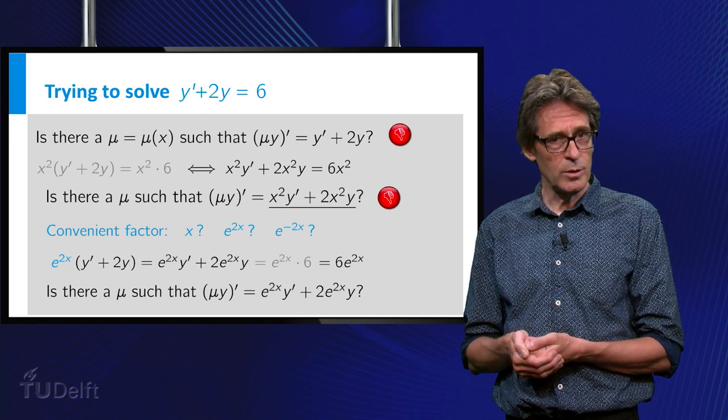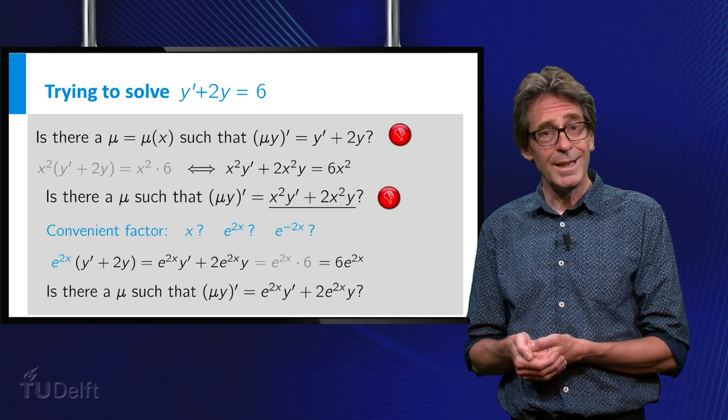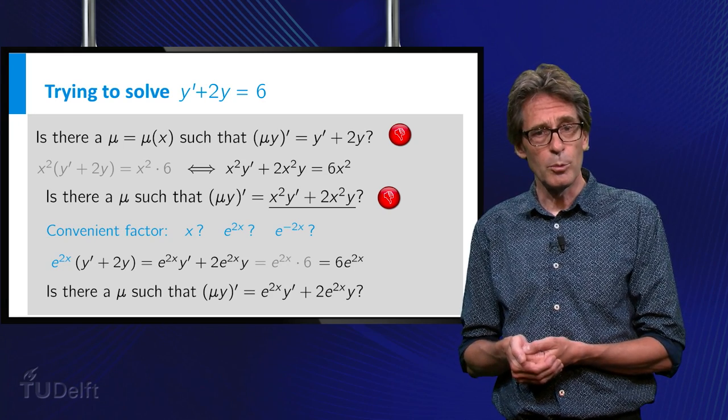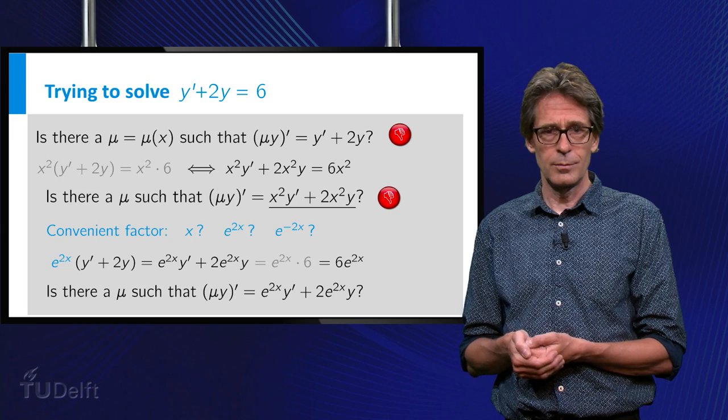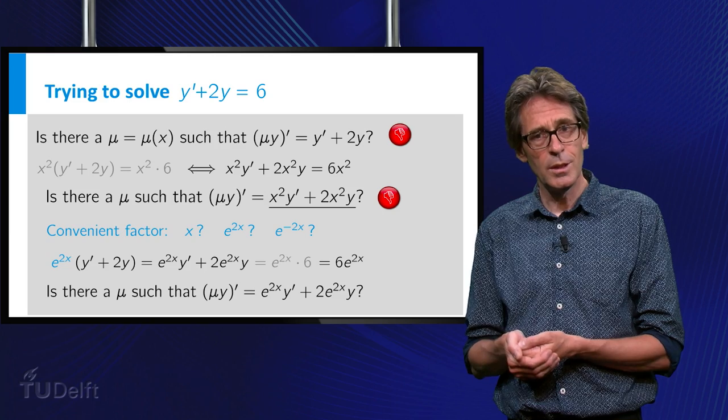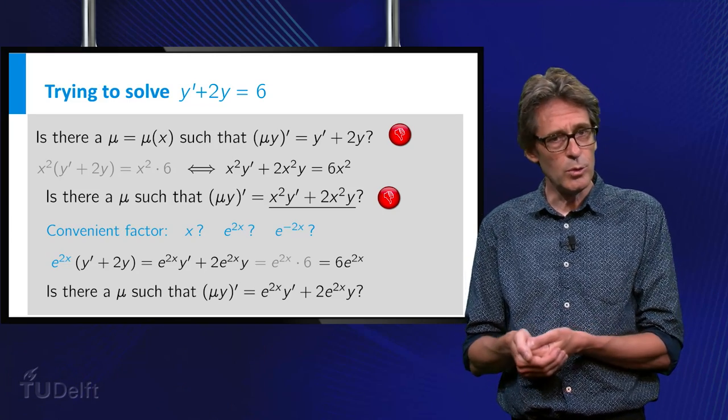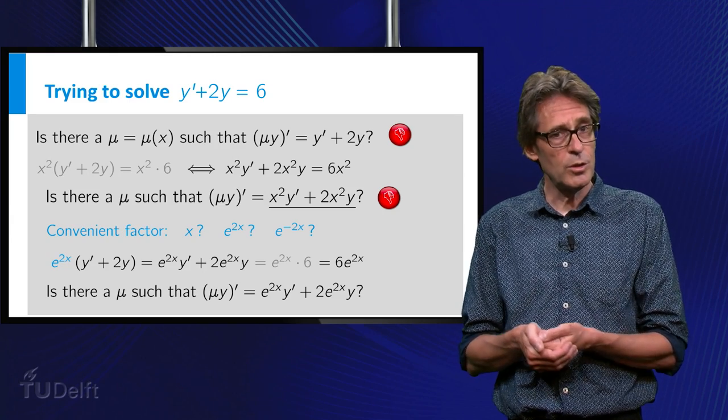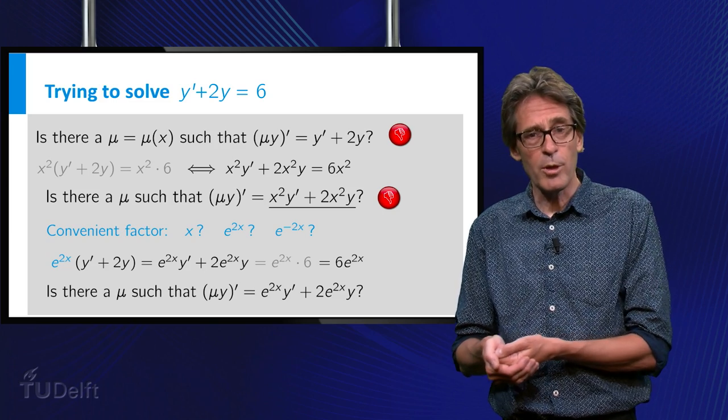And guess what? The new left hand side is equal to the outcome of the product rule. Indeed the derivative of e to the 2x times y equals 2 e to the 2x times y plus e to the 2x times y prime.